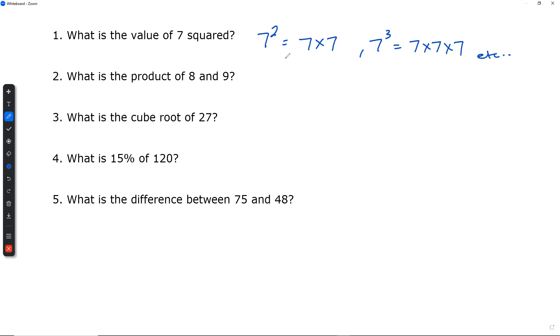So we can see this is going to be 49. So 7 squared is going to be 49, 7 times 7, which equals 49.